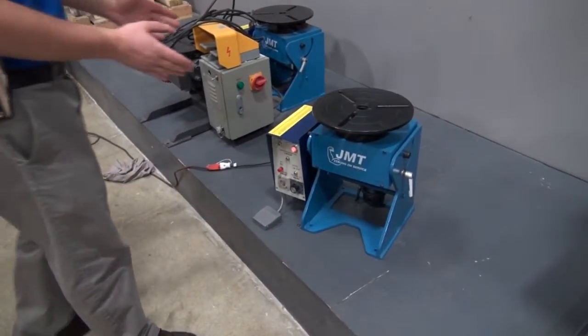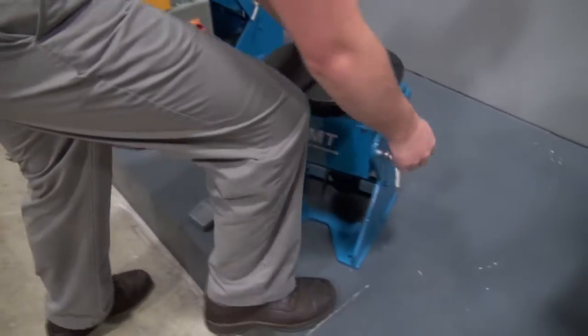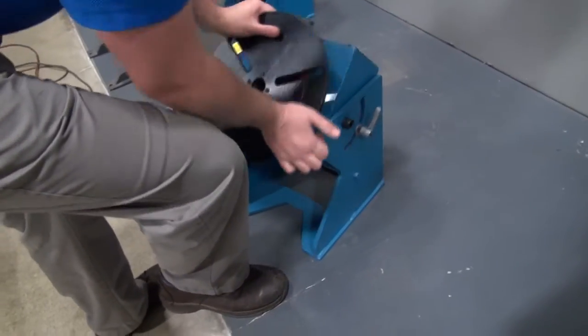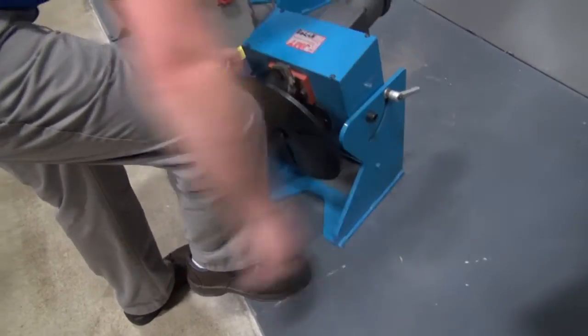Okay, we're just going to go over the small JMT weld positioner. To rotate it real quick, you just loosen this, lock it back in place.